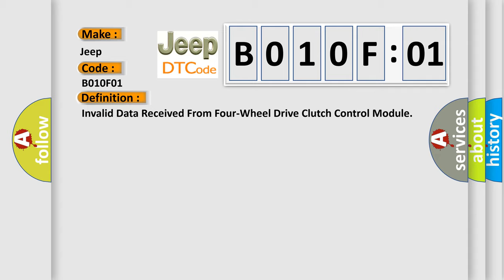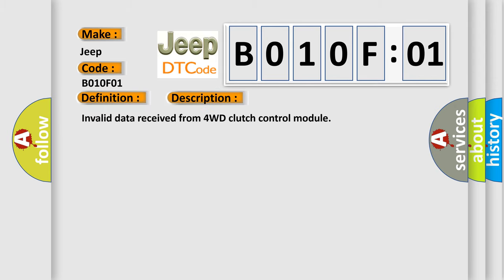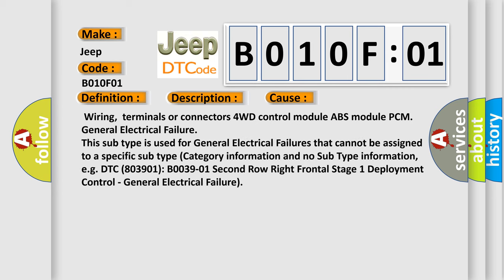And now this is a short description of this DTC code: Invalid data received from 4WD clutch control module. This diagnostic error occurs most often in these cases: wiring terminals or connectors for WD control module, ABS module, PCM general electrical failure. This subtype is used for general electrical failures that cannot be assigned to a specific subtype category. Information and no subtype information. E.g. DTC B03901: B003901 2nd row right frontal stage 1 deployment control, general electrical failure.